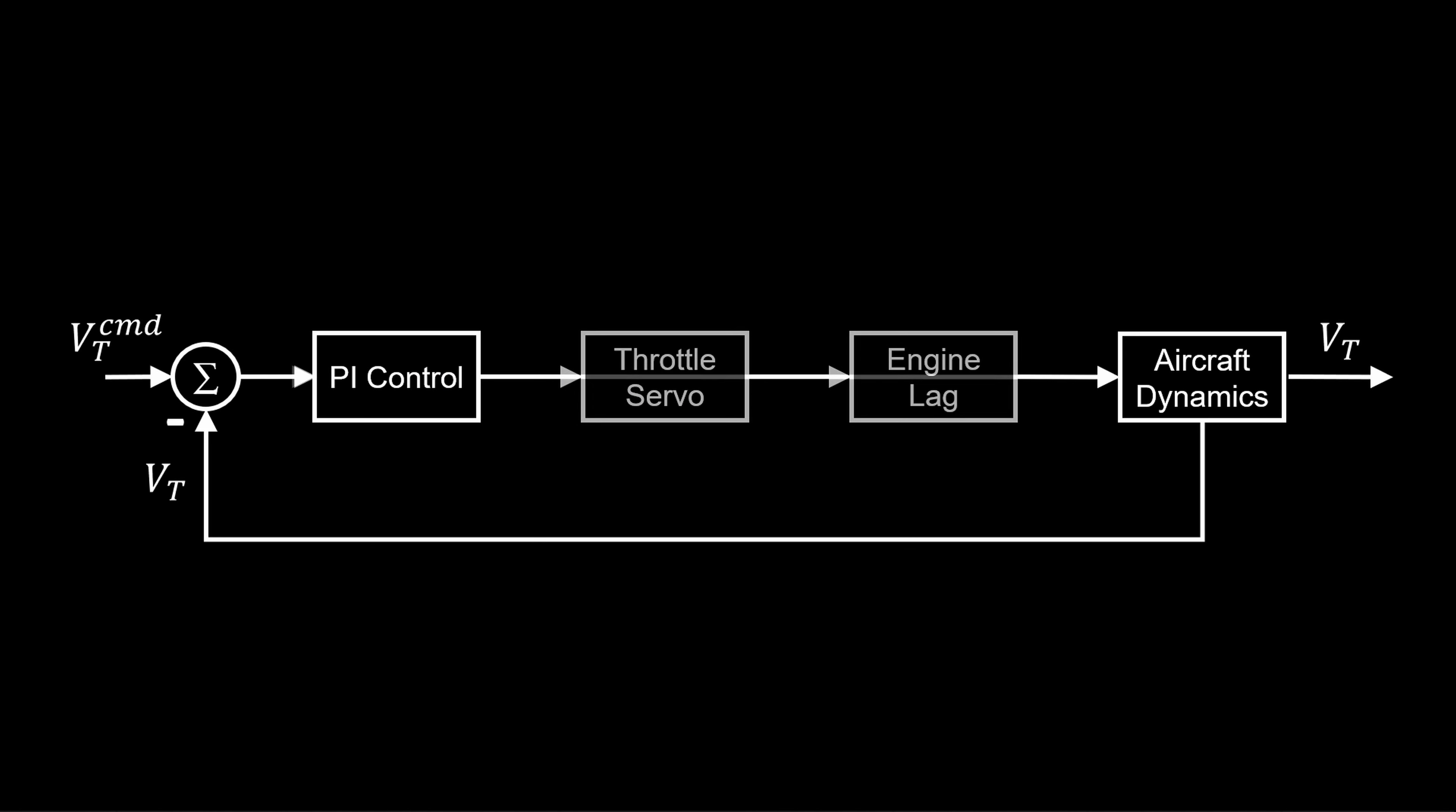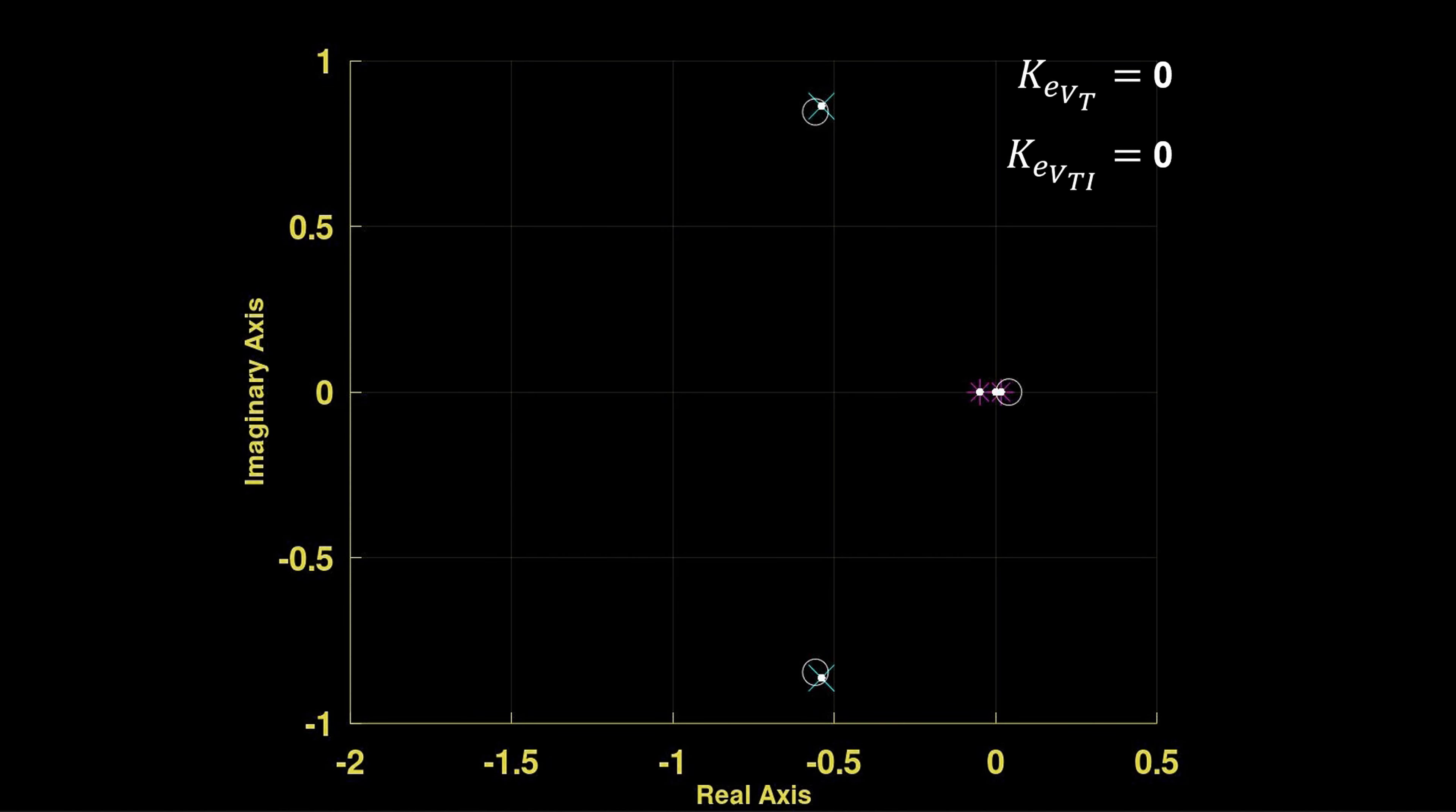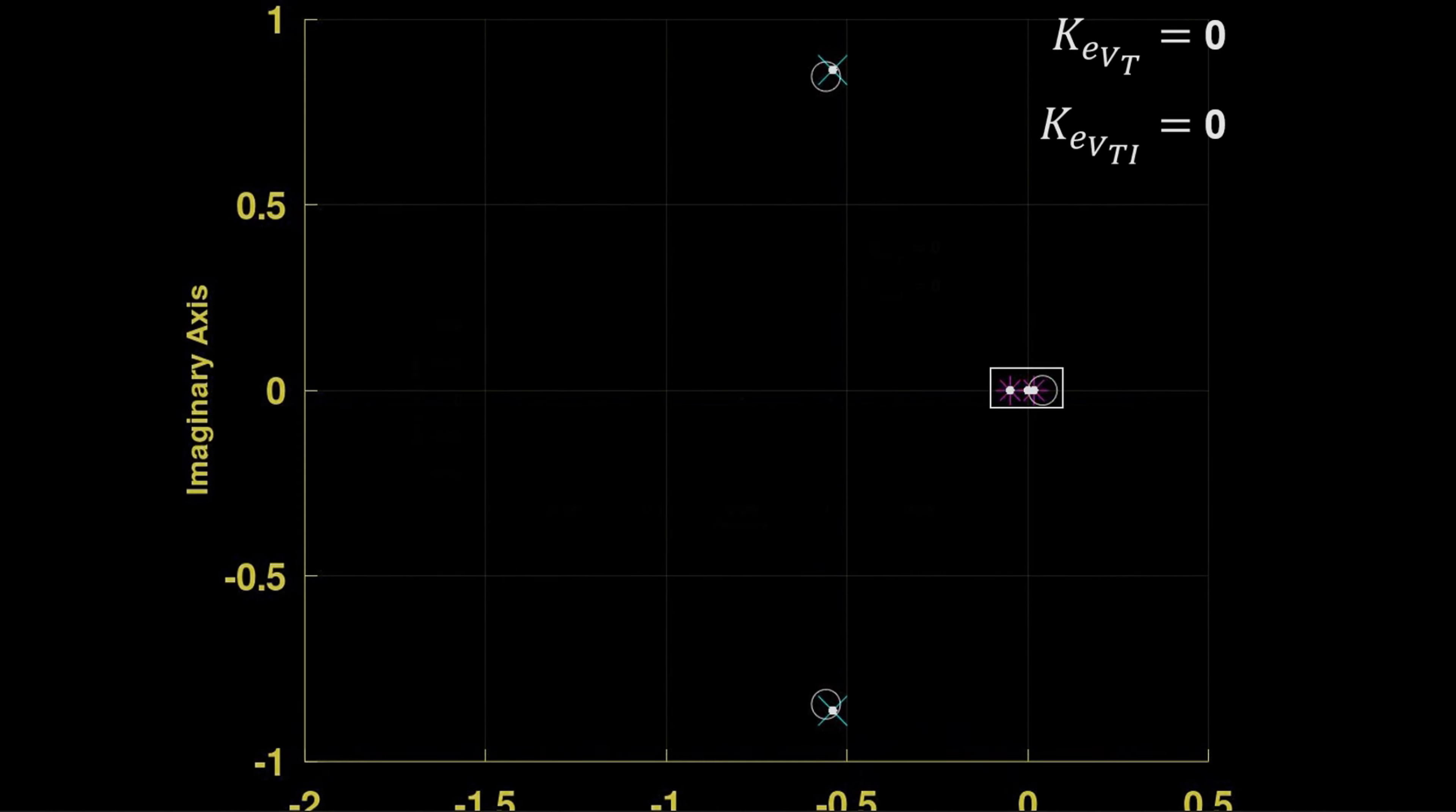To start, we first explore tuning without the throttle and engine. This is the open loop root locus with both proportional and integral gains set to zero. Also shown are the closed loop poles as white dots. For the zero gains, as expected, they overlay on the open loop poles. Now let's look closer near the phugoid.